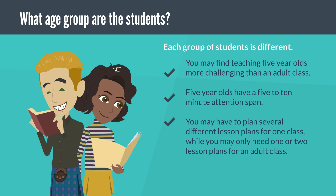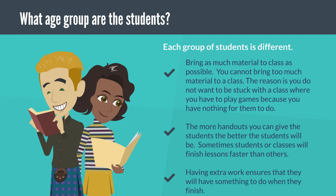What age group are the students? Each group of students is different. You may find teaching five-year-olds more challenging than an adult class. Five-year-olds have a five to ten minute attention span. You may have to plan several different lesson plans for one class, while you may only need one or two lesson plans for an adult class. Bring as much material to class as possible. You cannot bring too much material to a class.